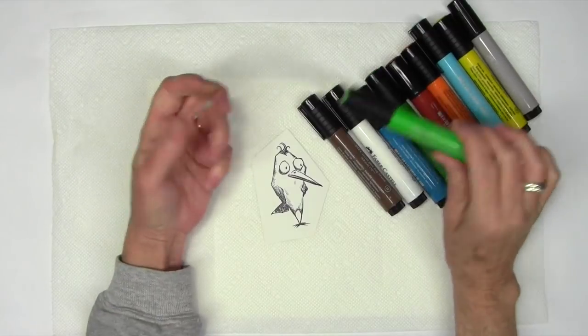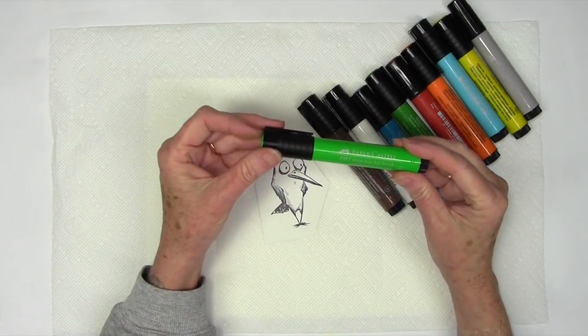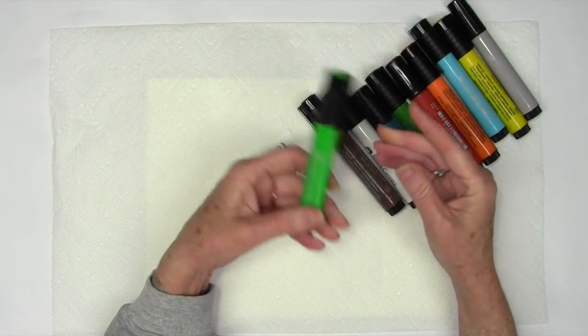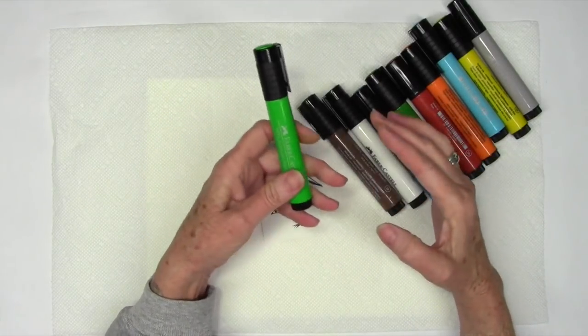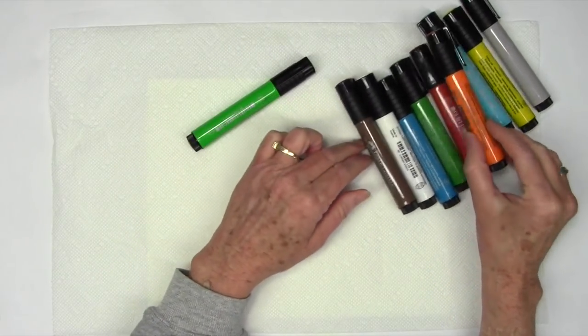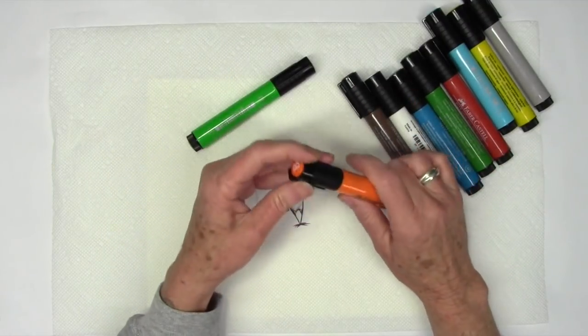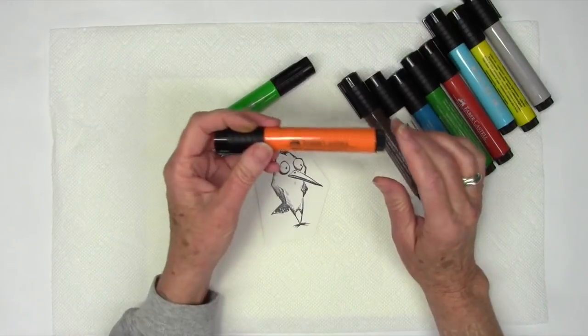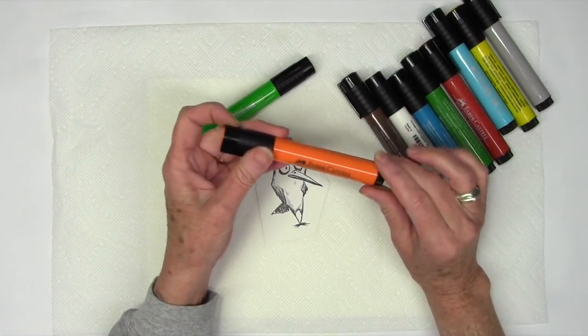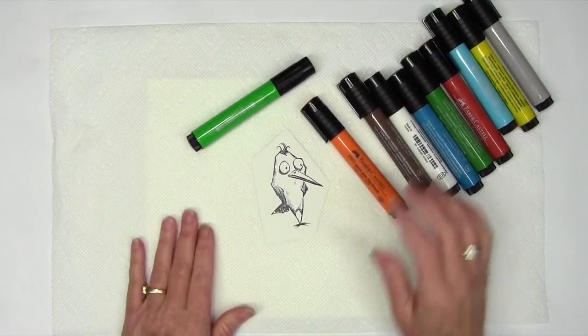Another one of my favorite Faber-Castell products are the Pitt Artist Pen, and these are the big brushes. They come in smaller ones as well. You can buy these individually or in a three-pack that's kind of ombre looking. But what these are, are they're India ink. India ink is much different than your Copics or your water-based inks, meaning that you have a little bit of time to play with them before they dry. And when they dry, they're permanent.